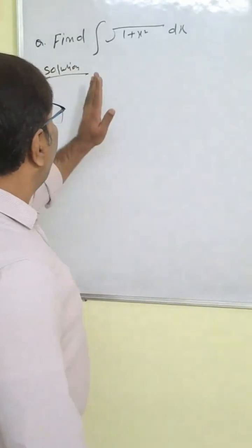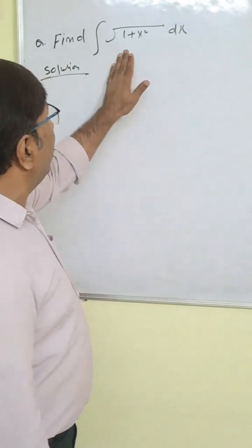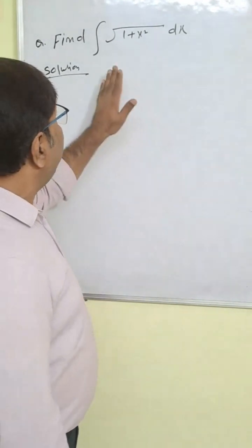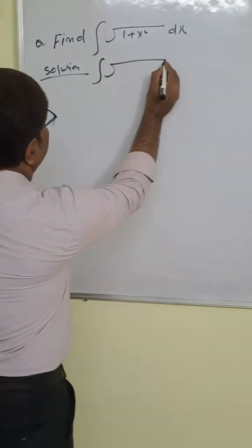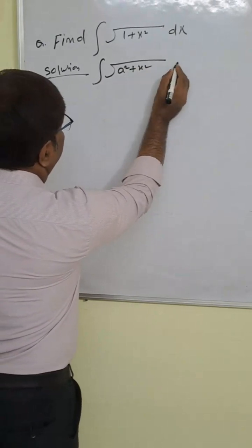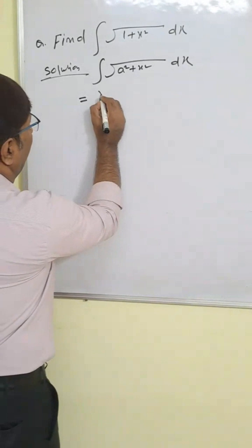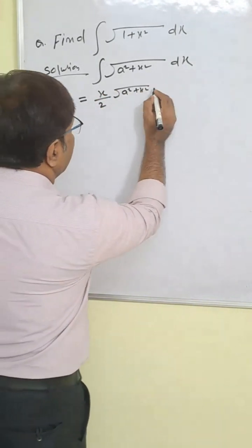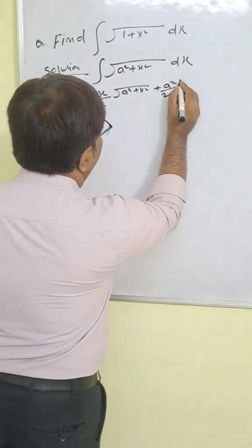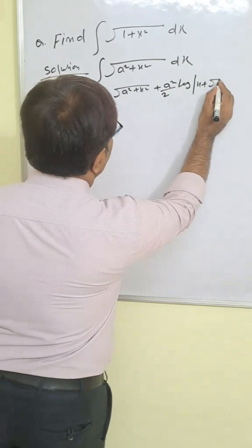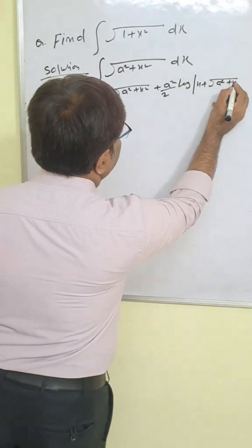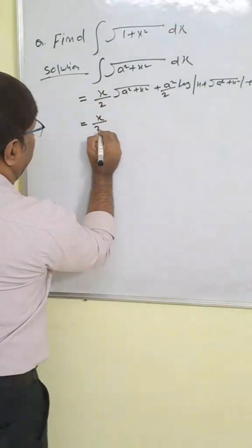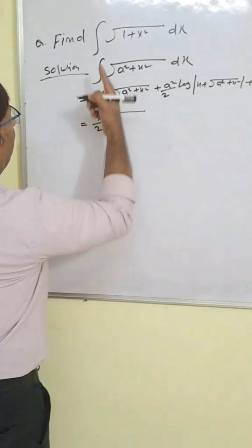Find integration of root under 1 plus x square dx. For this type of question, you know the formula: integration of root under a square plus x square dx equals x by 2 times root under a square plus x square. So same formula we will use here, with x as x.